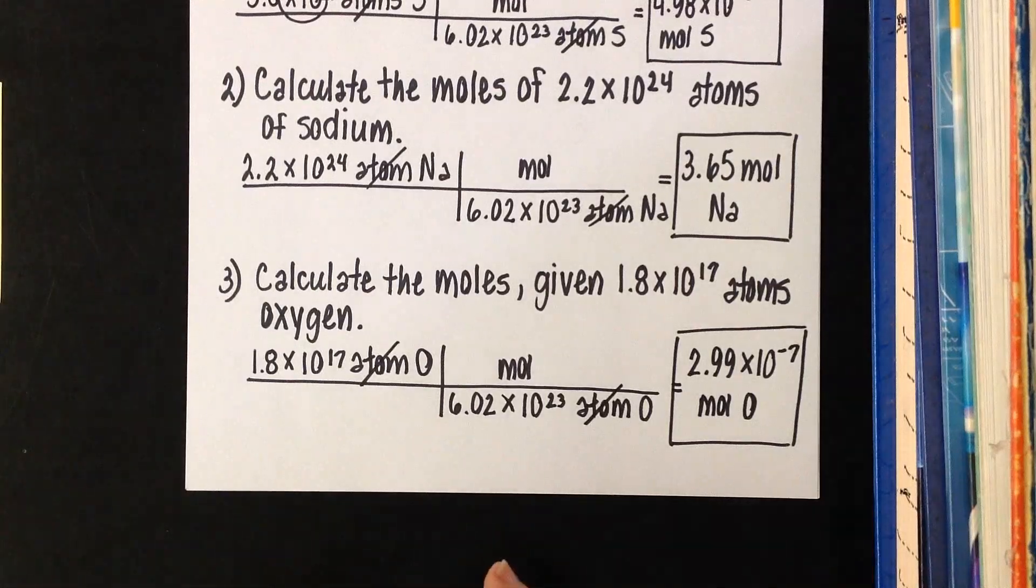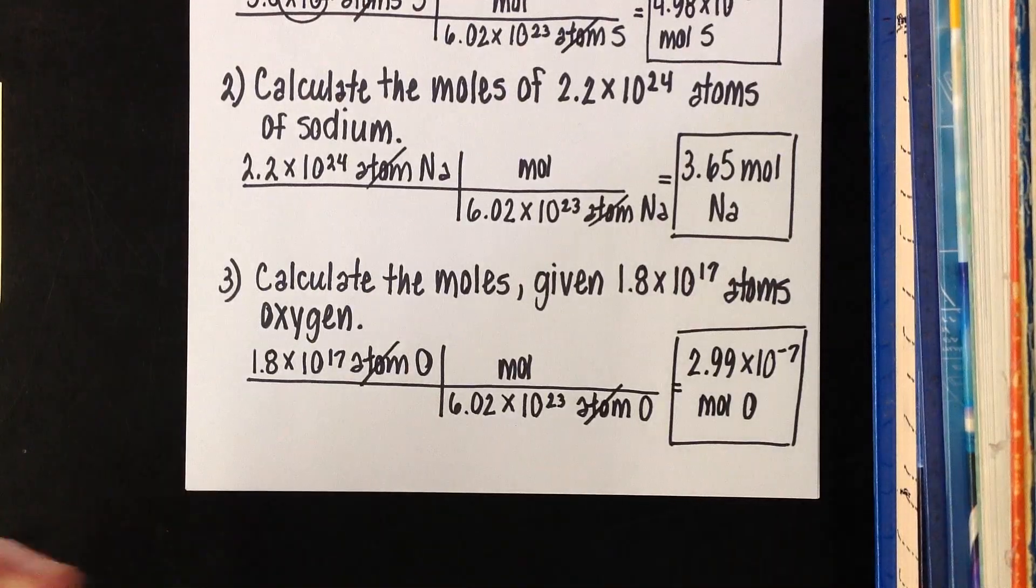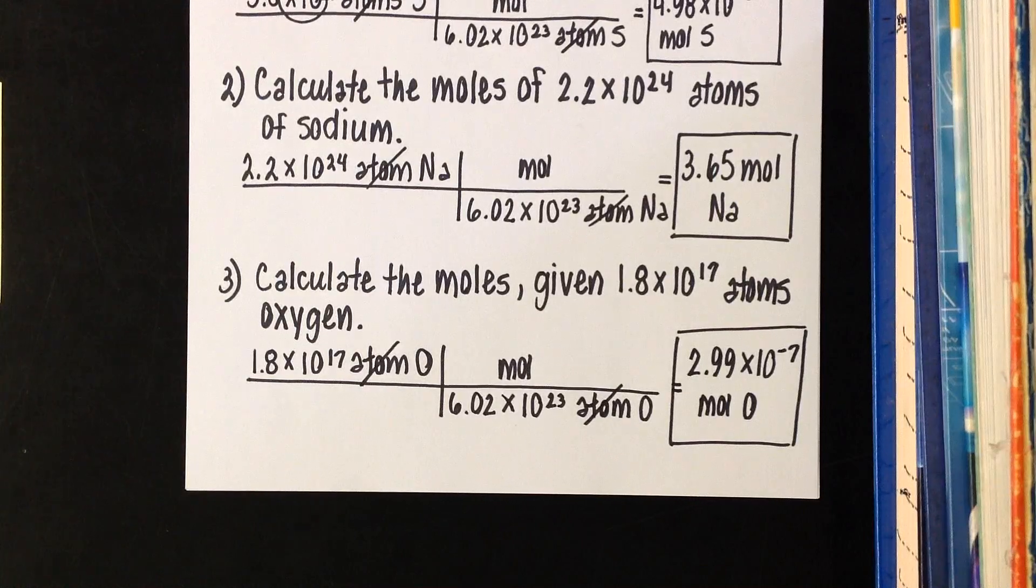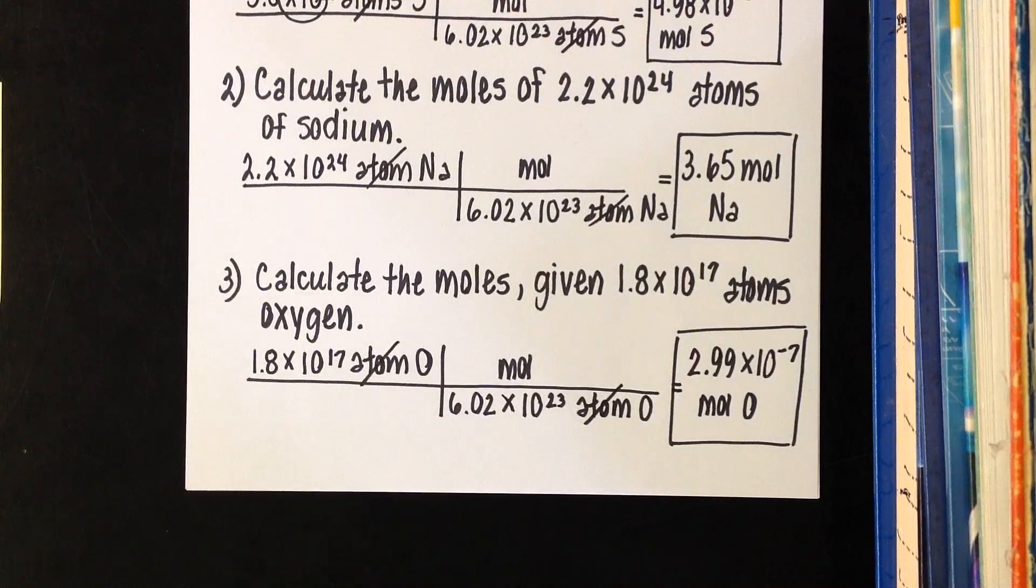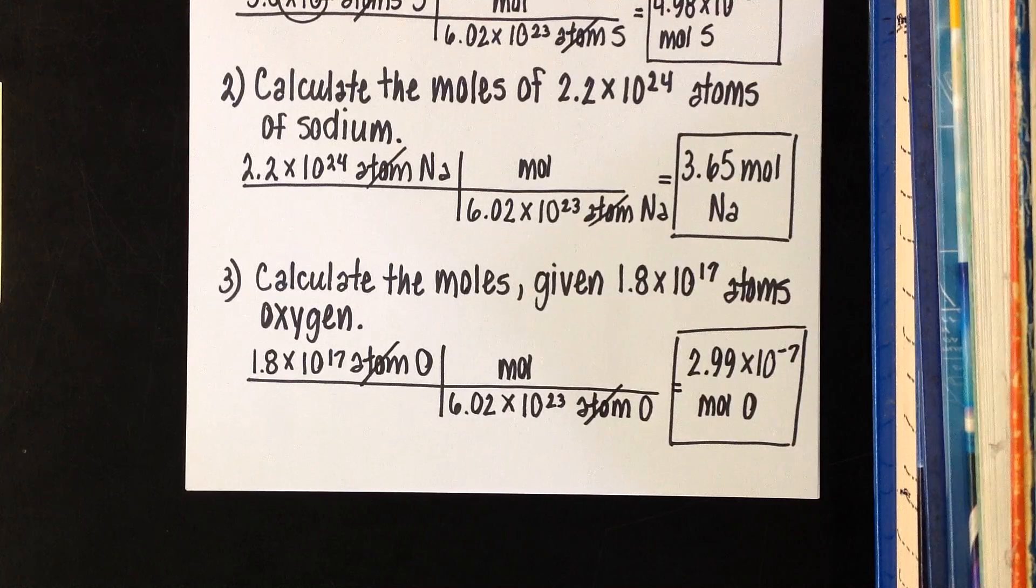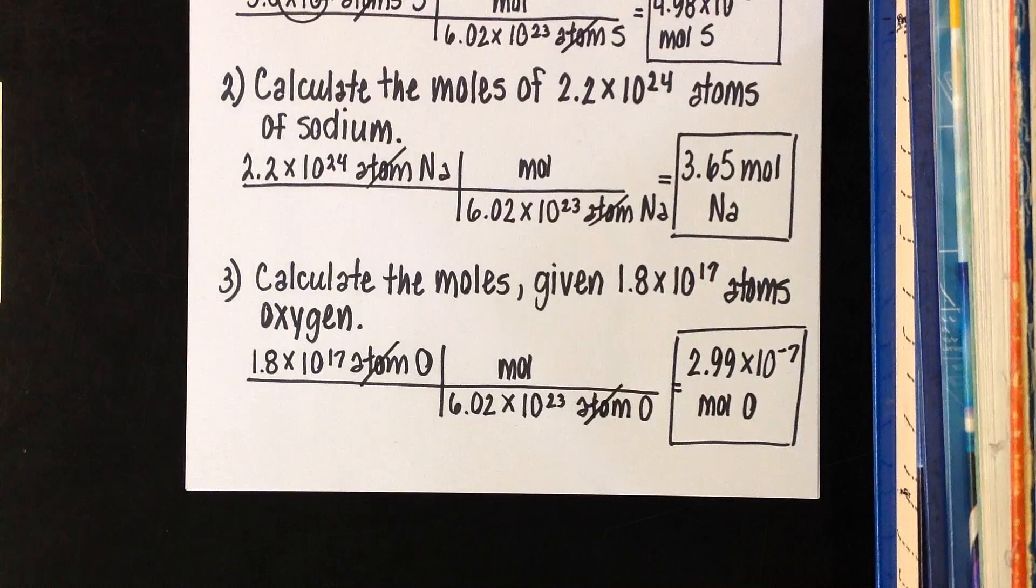A couple things I'll point out before we wrap up this lesson. Notice we did not use any masses from the periodic table here. That's because grams were not involved. They didn't ask me for grams, they didn't give me grams. For these problems, they simply want to know how many. We're just really looking at a numerical value. So the next tutorial is actually going to be putting these gram mole problems with these mole atom problems, and we're going to see how they can link up and make a larger, but honestly just a simple problem.